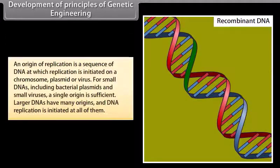An origin of replication is a sequence of DNA at which replication is initiated on a chromosome, plasmid or virus. For small DNAs, including bacterial plasmids and small viruses, a single origin is sufficient. Larger DNAs have many origins and DNA replication is initiated at all of them.